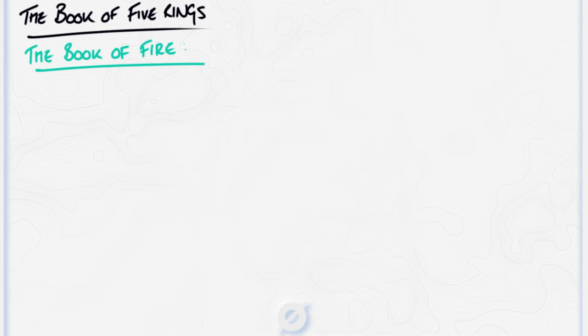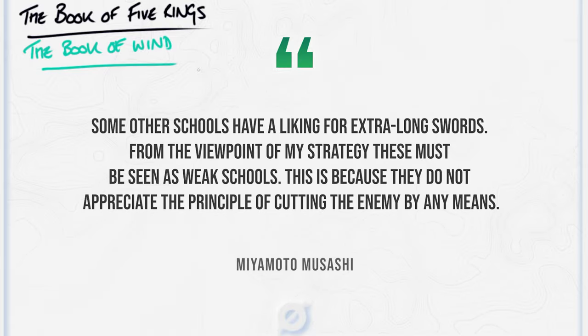The Book of Wind is the fourth book in the Book of Five Rings, and to be honest it's probably the least practical book in our modern day life. However, in the Book of Wind, Musashi warns of the over-reliance on one set of tools, and the lack of flexibility that comes with this. This is because they do not appreciate the principle of cutting the enemy by any means. This warning in the Book of Wind of over-reliance on one way can be applied to almost anything, and it's a good reminder for us to think and learn broadly.